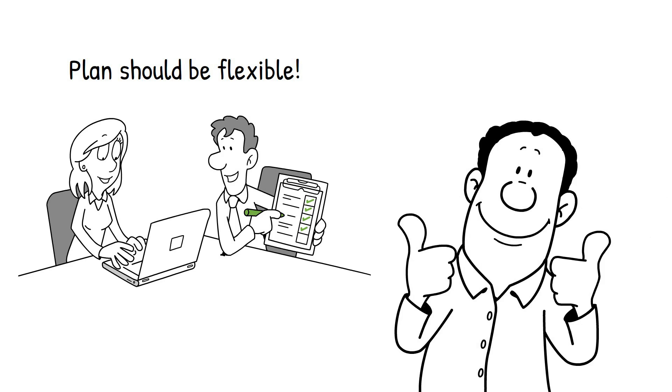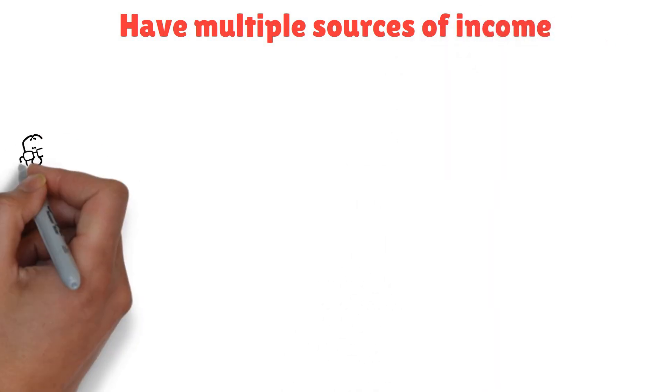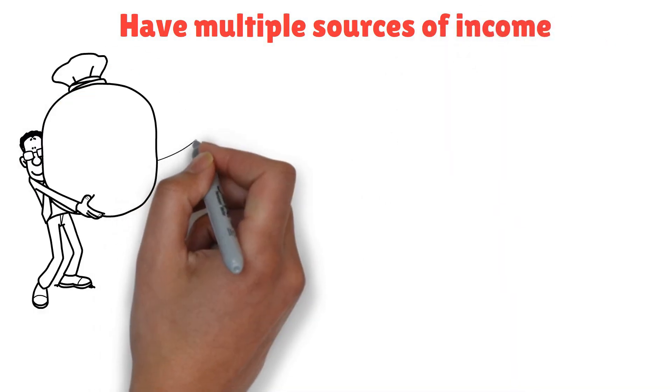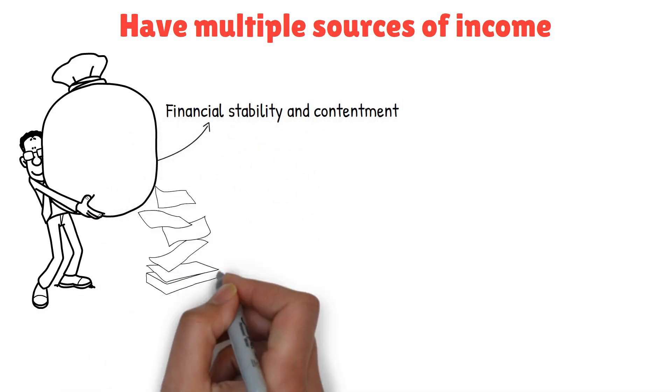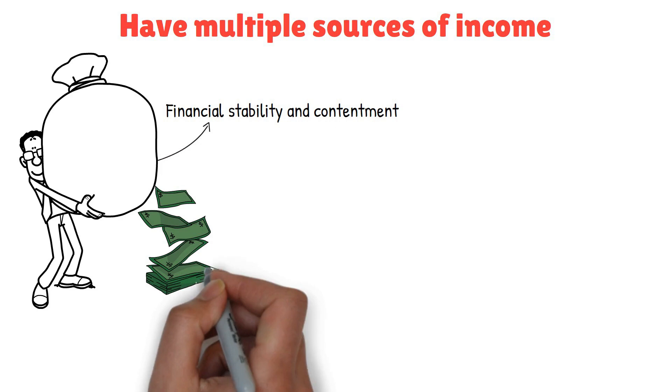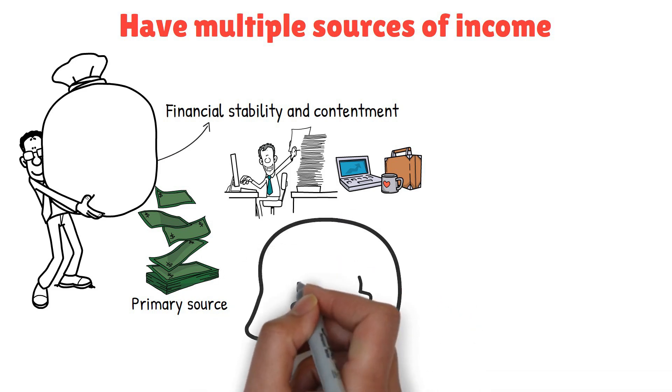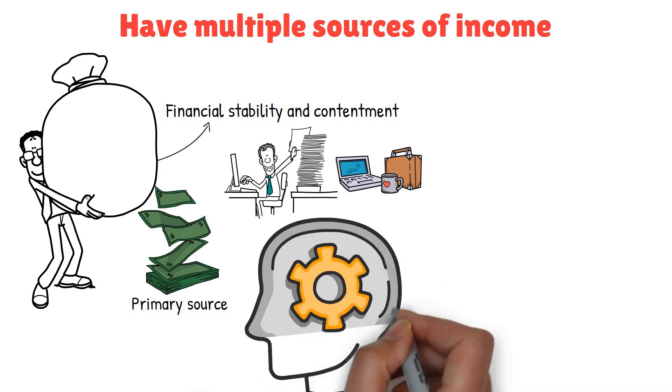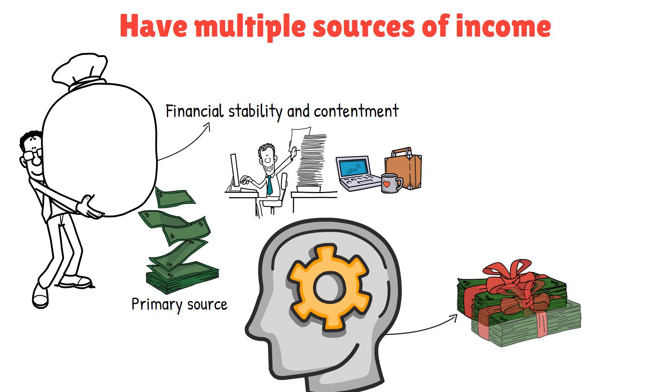The next thing you need to do to murder your greed and achieve true contentment is have multiple sources of income. What better way to overcome greed than by having your own money? It might sound straightforward, but it's a powerful way to ensure financial stability and contentment. So, how does this work? First, start by having a primary source of income. This could be your job, a business, or any regular activity that brings in money. The key is to develop valuable skills that you can exchange for money. Whether it's through education, training, or hands-on experience, building skills that are in demand can help you secure a reliable income.